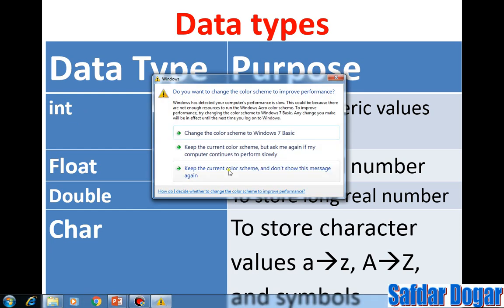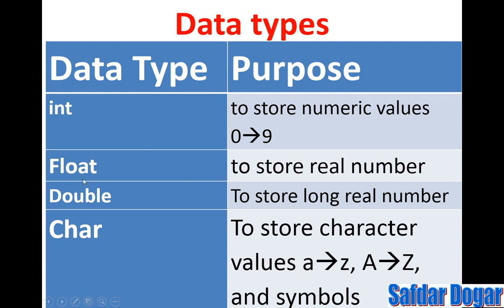The other data type is float. The float data type is used to store a real number. If you want to store a real number, then you use the float data type. For example, float data type values are 5.6 or 2.9 — you can store these in the float data type.